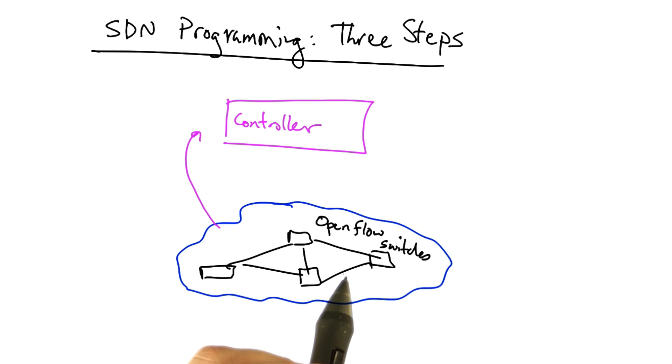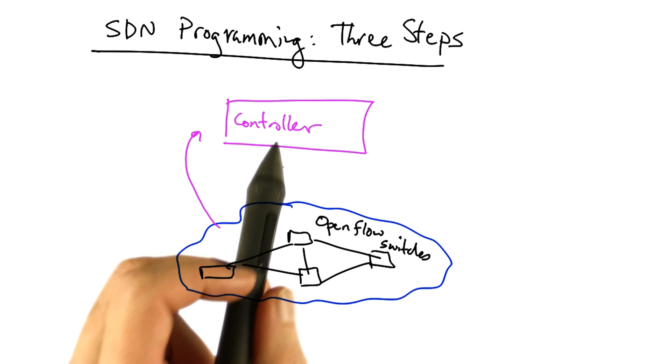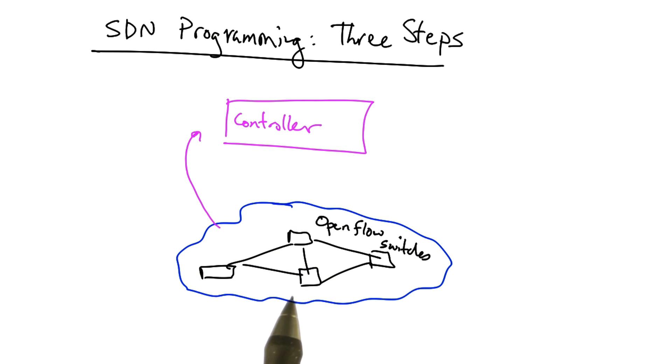Let's consider a network of SDN switches, such as OpenFlow switches, and a controller that is controlling those switches. And let's assume that we would like to write a program using this interface. We can think about this programming as proceeding in three steps.